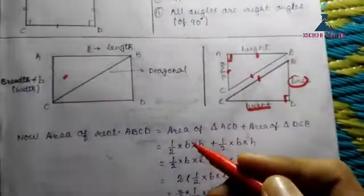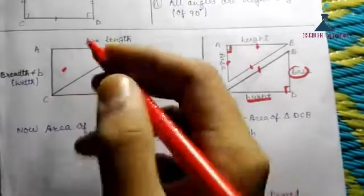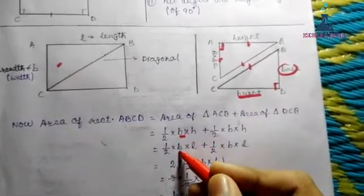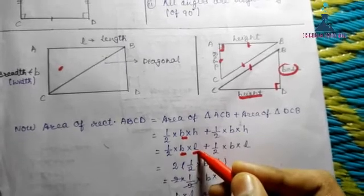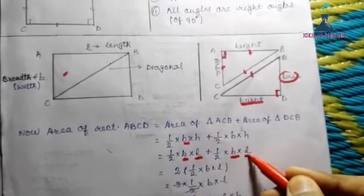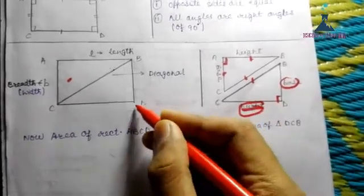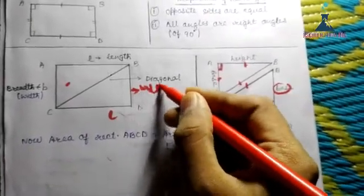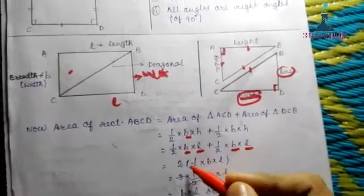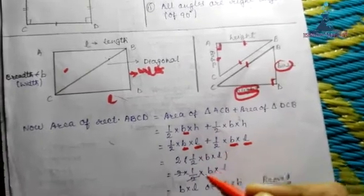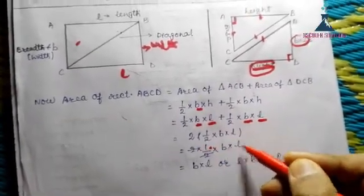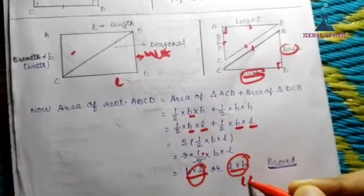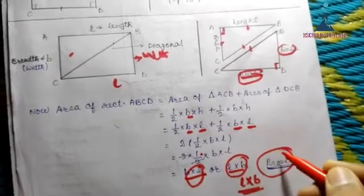Now substituting: the base is the breadth (b) and the height is the length (l) for both triangles. So we get: half into b into l, plus half into b into l. Adding these gives 2 times (half into b into l), and the 2 and the half cancel out, giving us b into l, or l into b. This proves that the area of a rectangle is l into b.